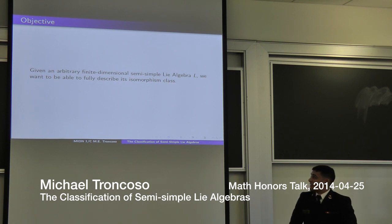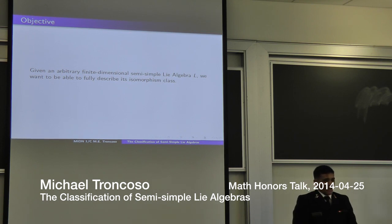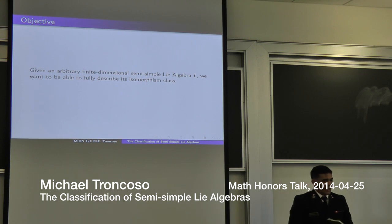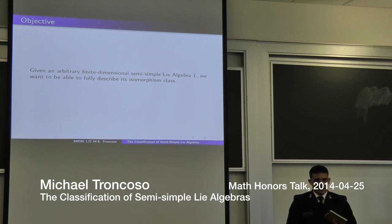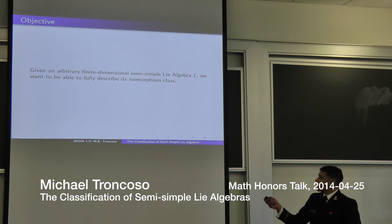Our objective for this talk will be: given an arbitrary finite dimensional semi-simple Lie algebra L, we want to be able to fully describe it as an isomorphism class. That basically means that if you give me a semi-simple Lie algebra L, I want to be able to give you an example that is completely isomorphic to that semi-simple Lie algebra.